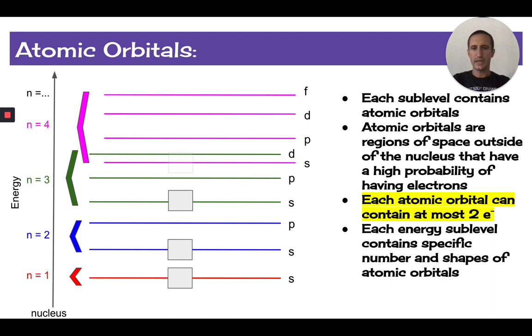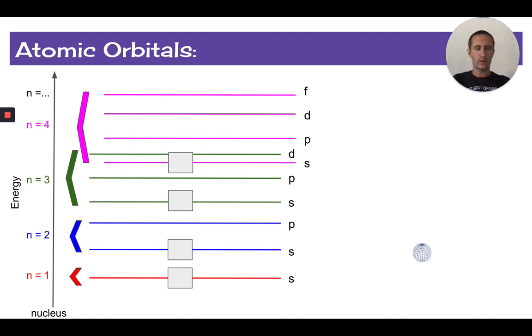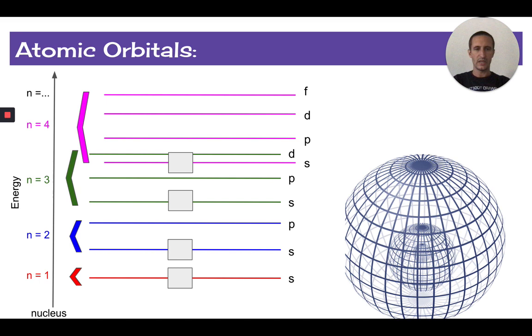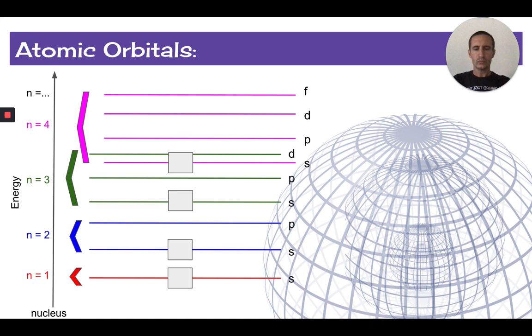An S sublevel, whether it's a 1S, a 2S, 3S, or 4S, always only contains one atomic orbital. And we call that a S-shaped orbital. And that S-shaped orbital is actually just a spherical-shaped orbital. As we mentioned before, these energy levels, they kind of nest on top of each other. And so the only difference between, like, a 1S orbital and a 2S orbital is its size. 2S is larger and overlaps or is bigger than, kind of contains the 1S. And then the 3S would be even bigger than that. The 4S would even be bigger than that.